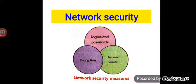There need to be security measures in place on every network, and the security measures are three kinds. First is logins and passwords, next is access levels, and third is encryption. Let us see all these things together one by one.